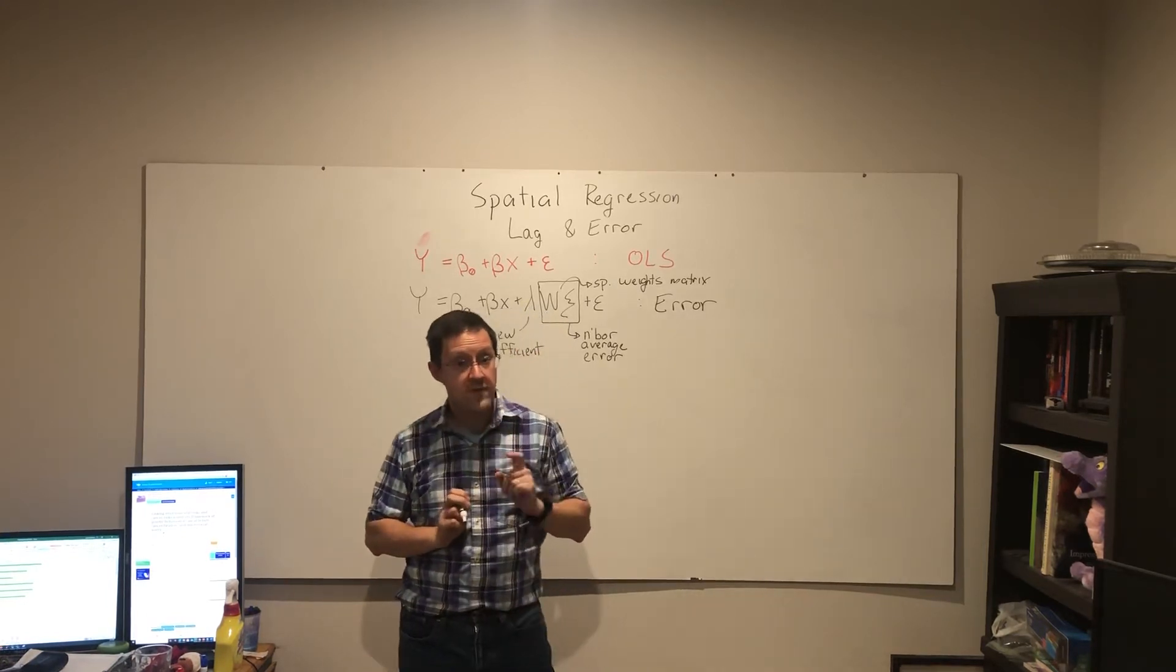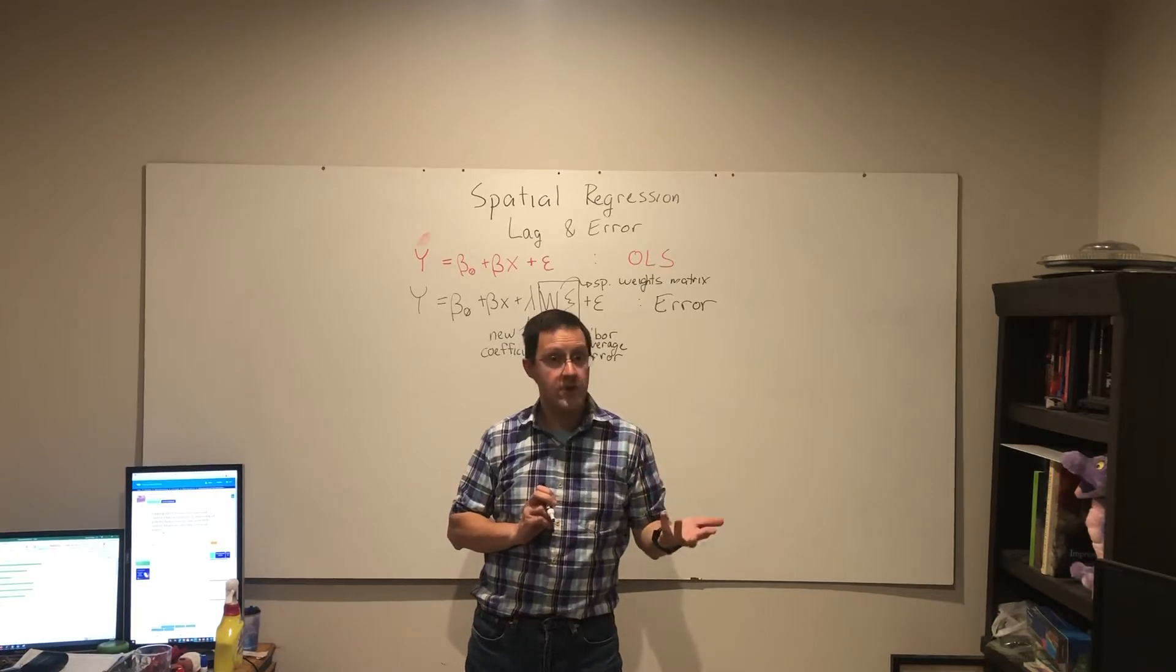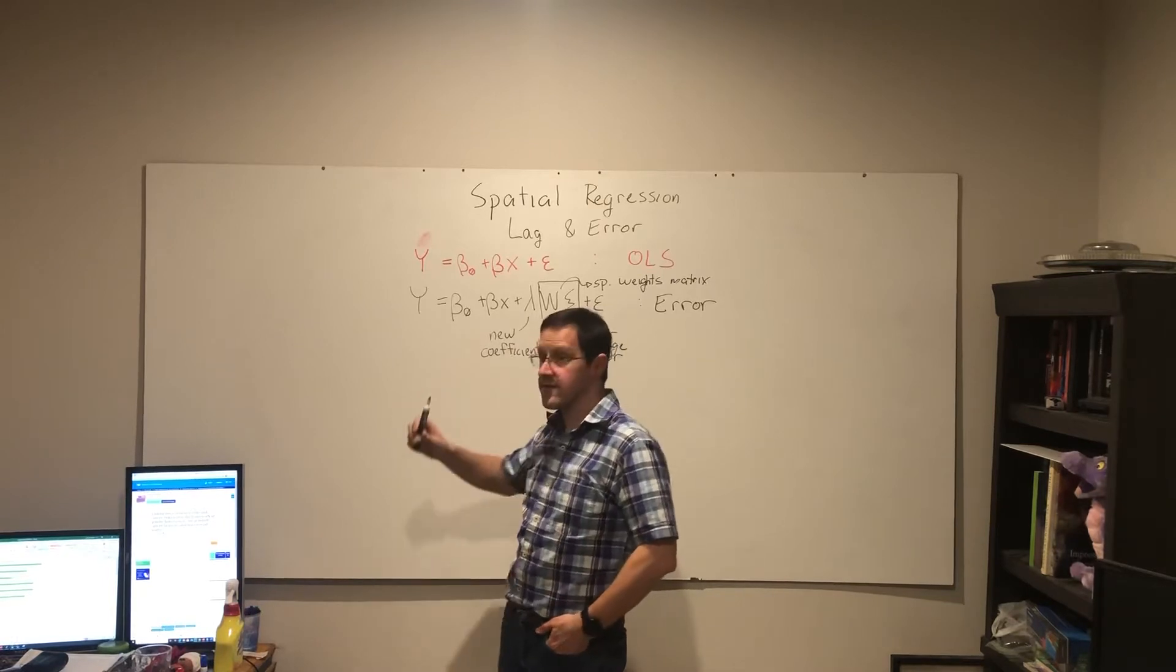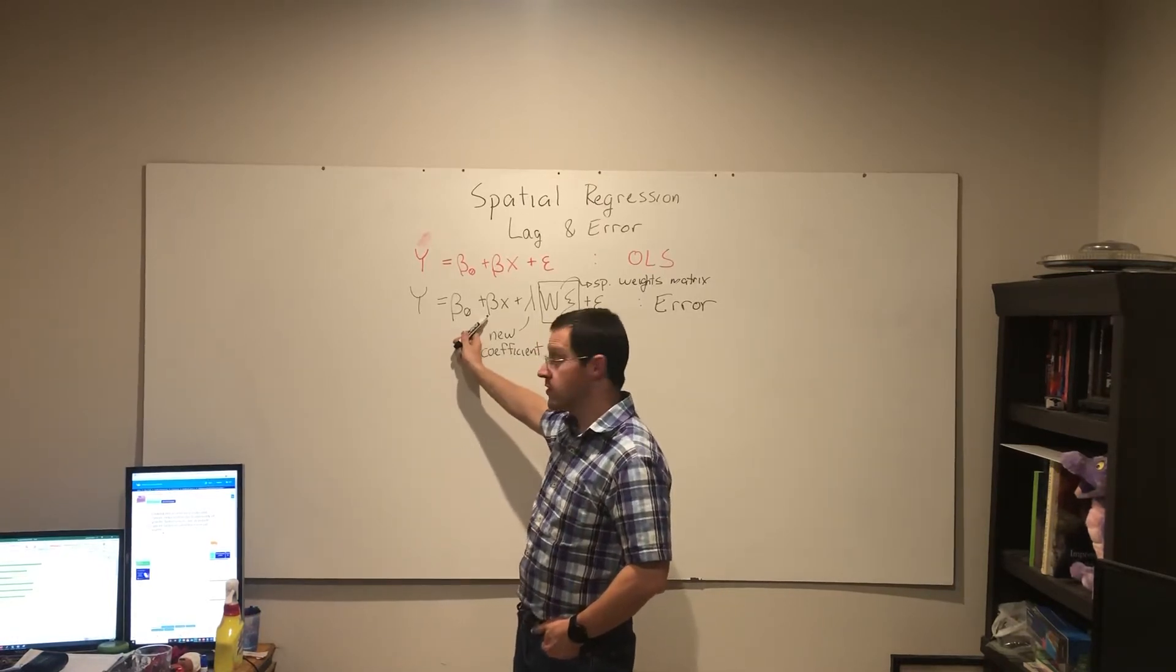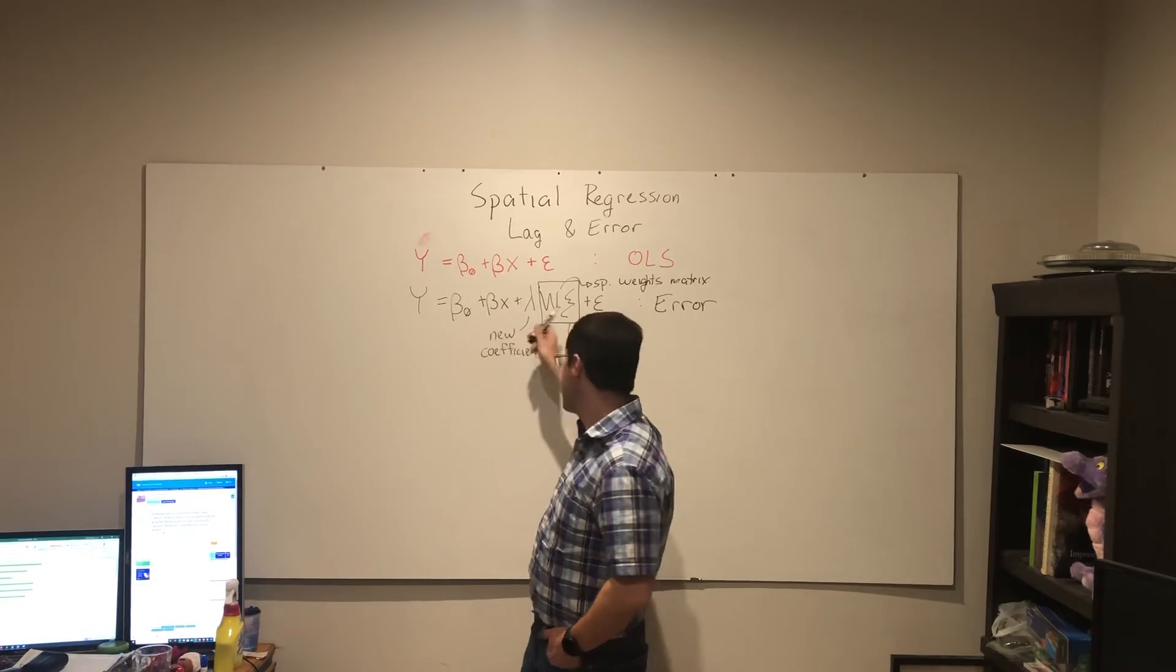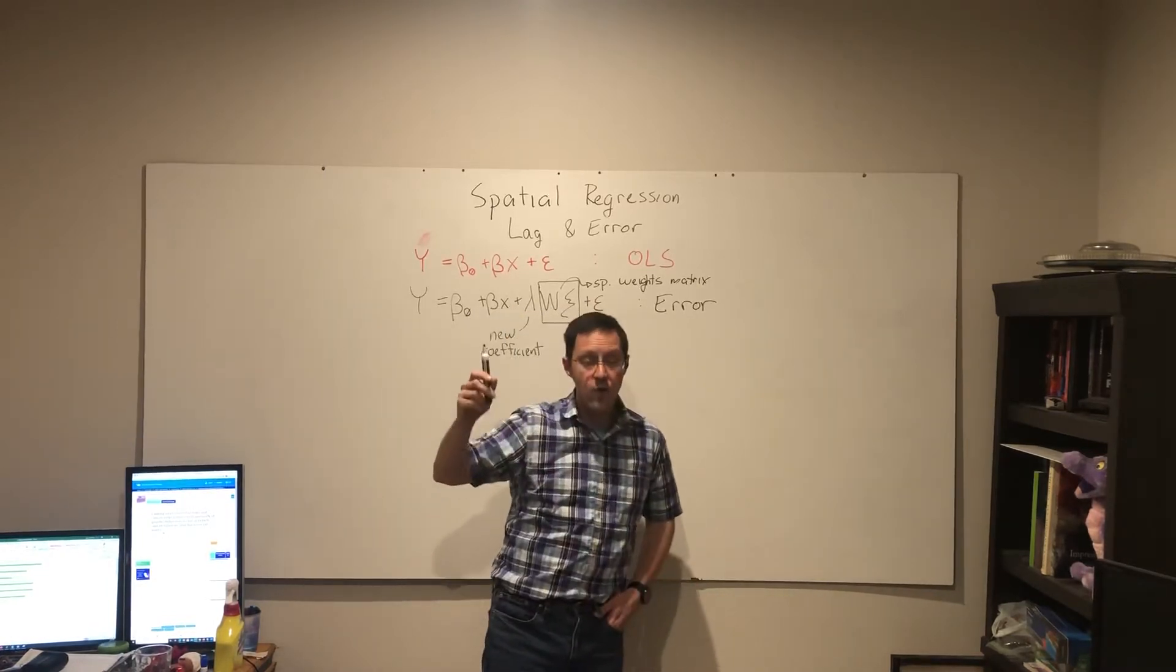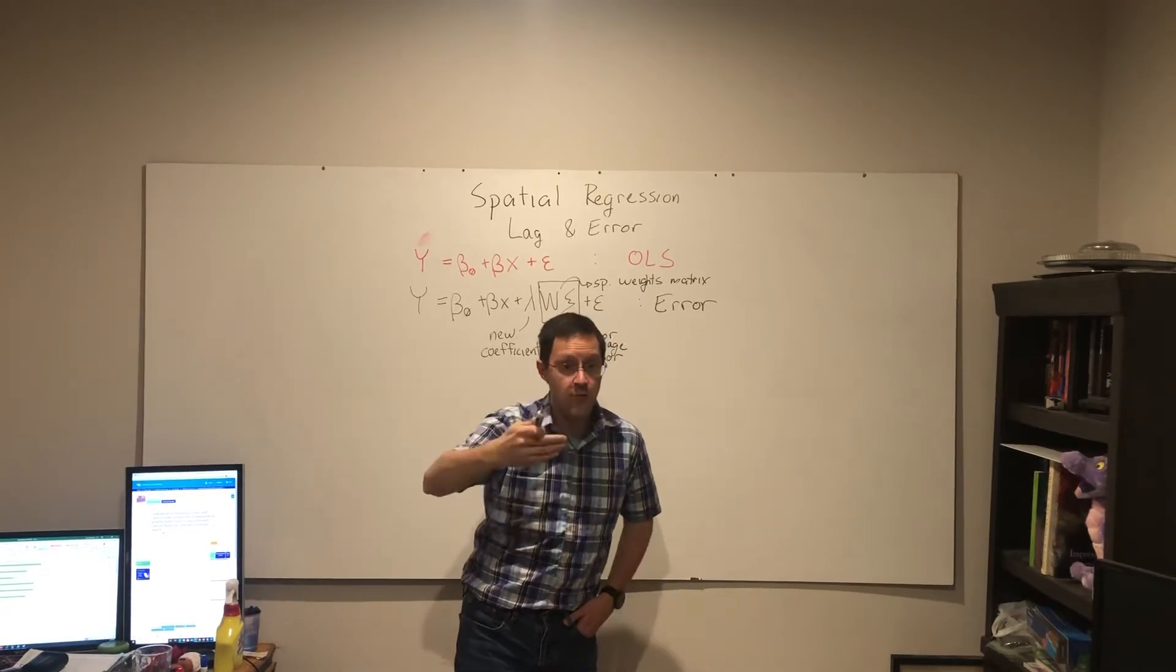So that would be spatial error regression. And you will get an output table that, among other things, will give you your coefficient, your intercept, your coefficient, but also this lambda term.